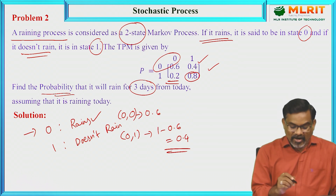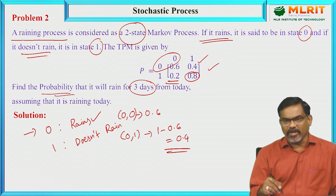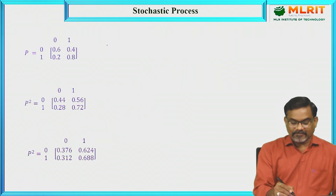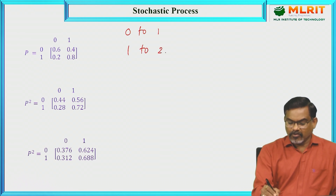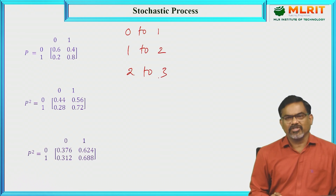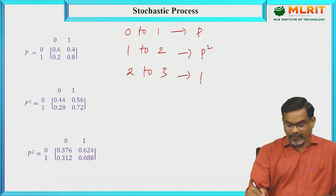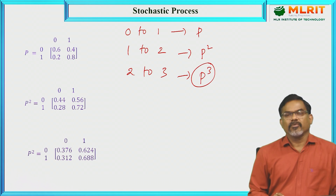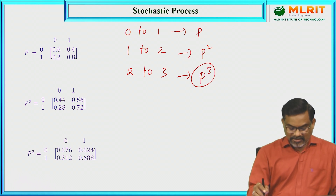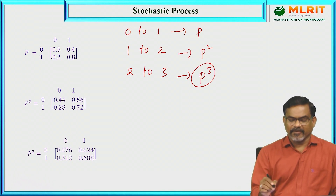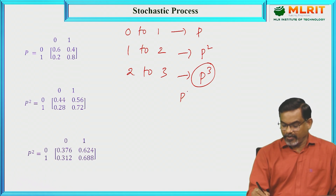The question is: find the probability that it will rain for three days from today, assuming that it is raining today. So we need to find P³, specifically the (0,0) element of P³, since state zero indicates raining.